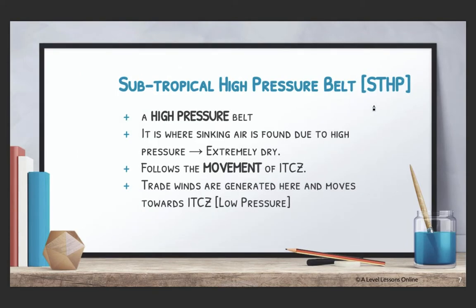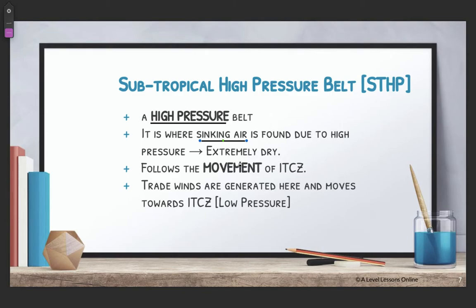Next, we move on to STHP. What is STHP? STHP is known as your subtropical high pressure belt. A subtropical high pressure belt, or STHP as many schools term it, is basically a high pressure belt. As we just mentioned — high pressure and temperature: how do they correlate? High pressure means low temperature. Basically, your STHP is where there is sinking air, and as a result it is extremely dry and cold.